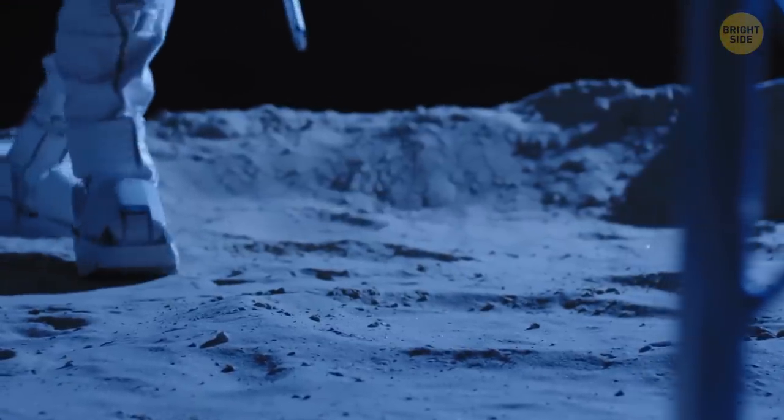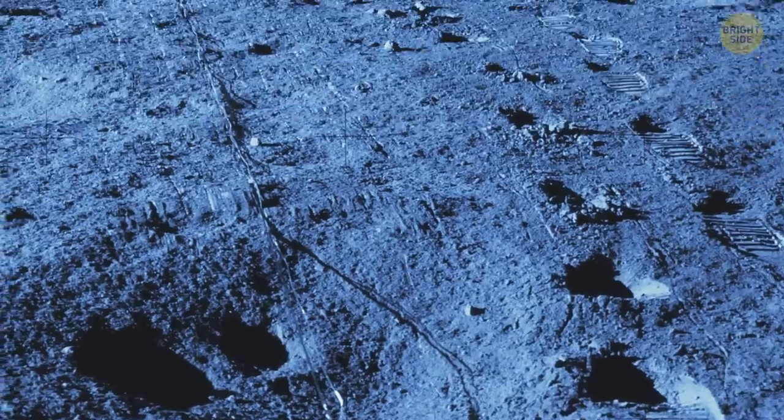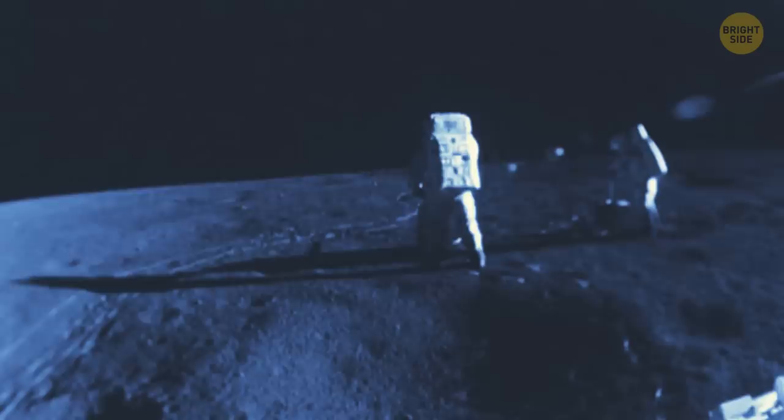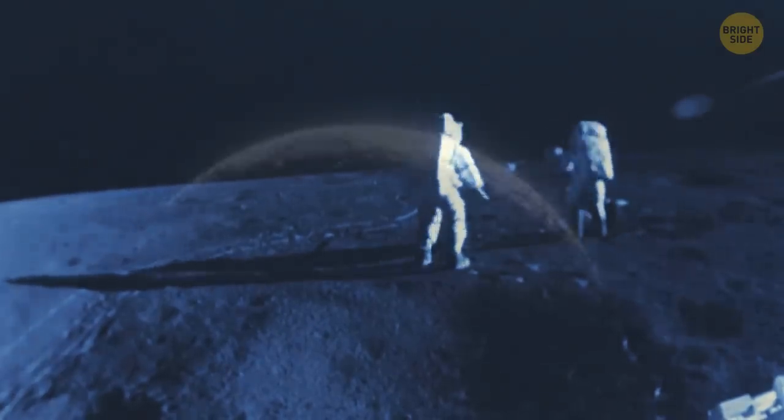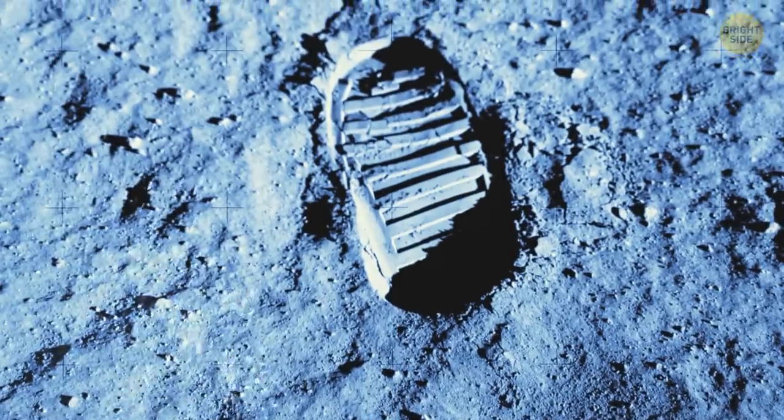If you stand on the Moon one day and leave your footprint on its surface, it can stay there for a million years. You'd also see the footprints of other astronauts, even though no one has landed on the lunar surface for decades now. The Moon doesn't have a full-fledged atmosphere. There's no breeze or anything else that can sweep up the dust and erase the footprints.